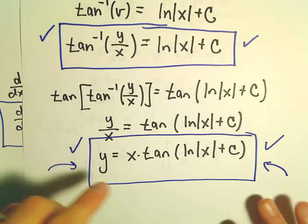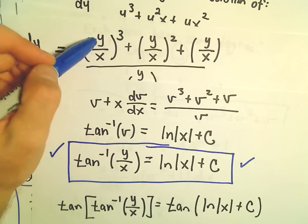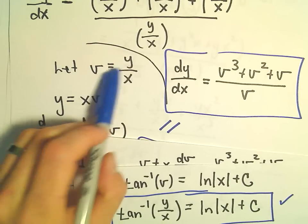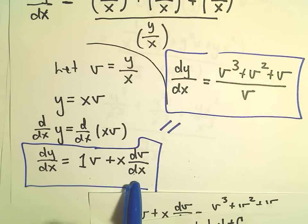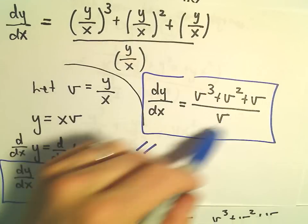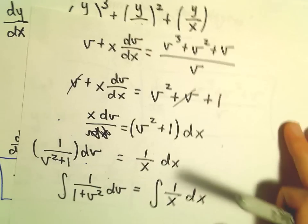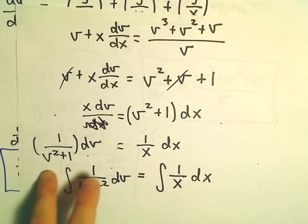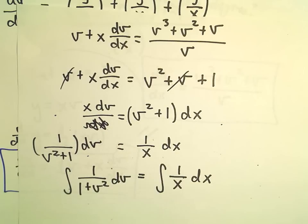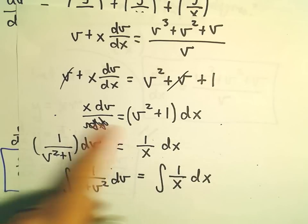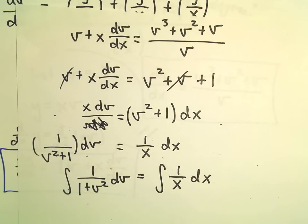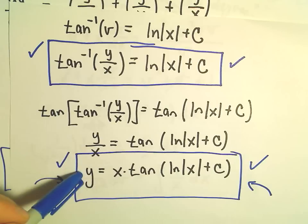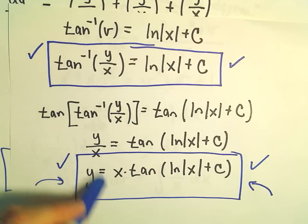So again, same basic procedure: divide by 1/x to the degree — that gives you lots of y/x ratios. Substitute those in. When we do the substitution v = y/x, you'll always end up with the expression v plus x dv/dx. Set those equal to each other. The integration and separation can involve some algebra, and the integrals can be tricky — maybe partial fractions, integration by parts, or natural logarithms will crop up. Once you have that, it's just a matter of back-substituting, and if possible, solving for y.